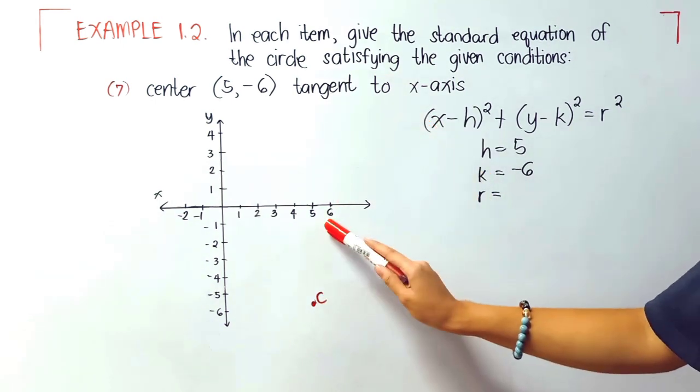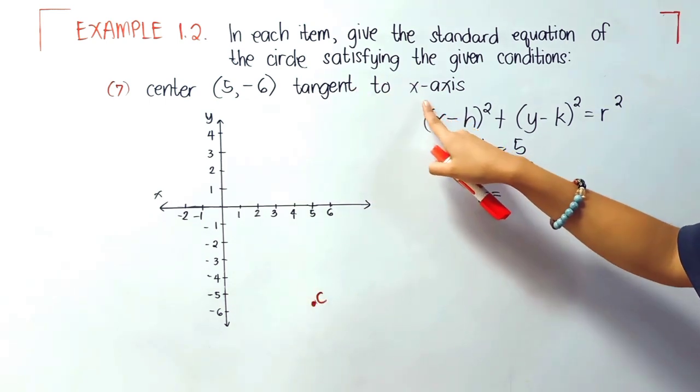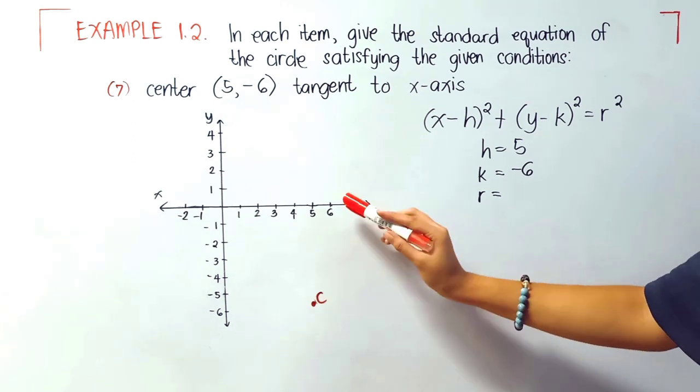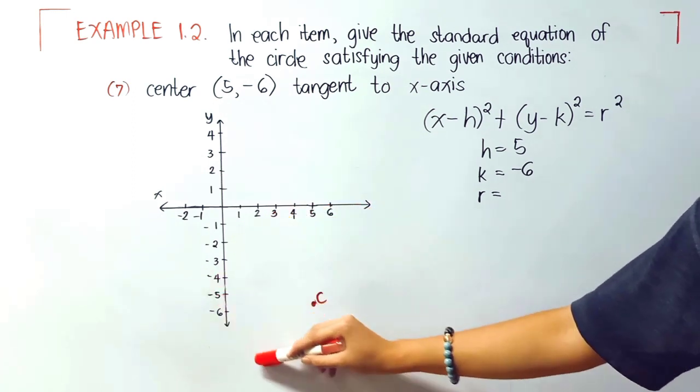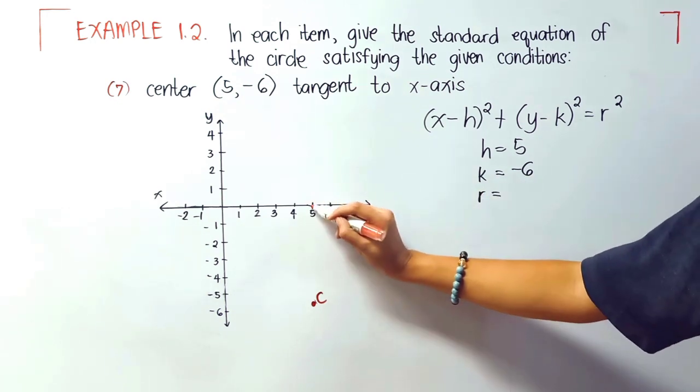Our circle is in this portion, and since it's tangent to x-axis, the circle should touch the x-axis in one point. So in this portion, I will be considering this point here.